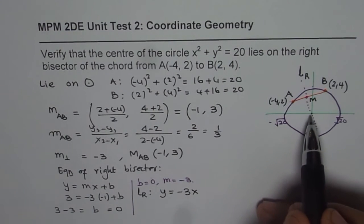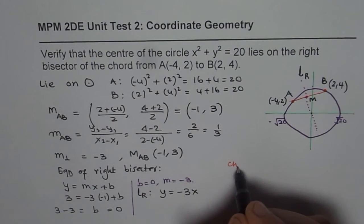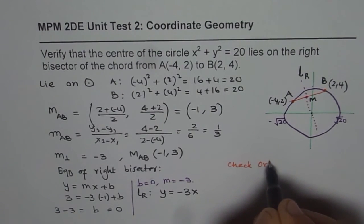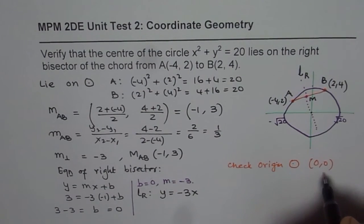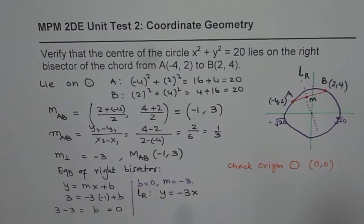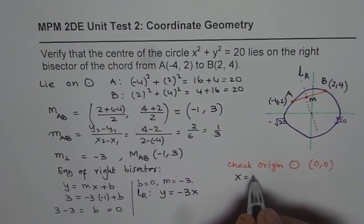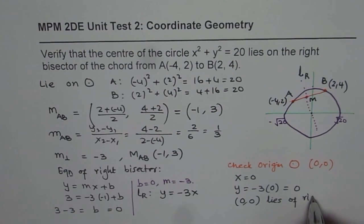We need to check whether origin, which is the center of this, is on the line or not. So we need to check origin, which is the center of the circle, in this case (0, 0), whether it lies on this line or not. So if I substitute x = 0, what is the value of y? y = -3(0) which is also 0. Therefore, the point (0, 0) lies on the right bisector, is it okay?